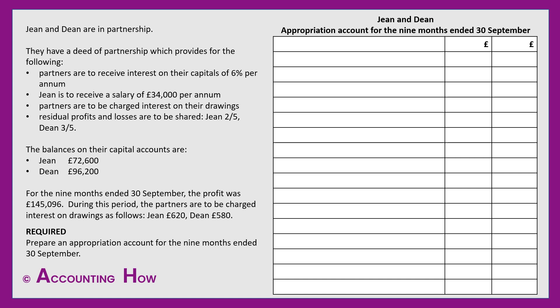I've got my title ready and the first thing I'm entering is the profit for the period — I've called it 'profit for the period' rather than 'profit for the year' because it relates only to nine months. I then look for interest on drawings, and in this question there are some. These need to be added on because they are effectively a penalty charged to the partners for taking drawings. Jean is charged £620 and Dean £580. These figures are already given for the period so no adjustment is needed — I simply enter and add them on, giving effectively £146,296 to be shared out before dealing with the other items in the deed.